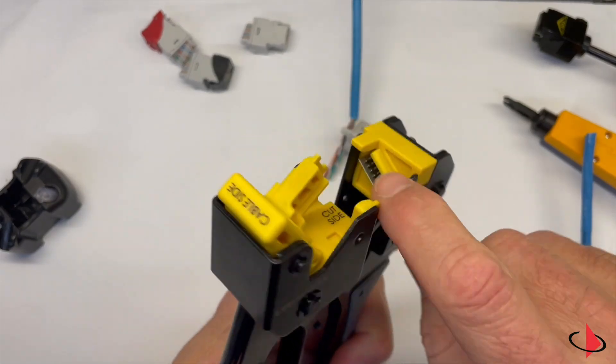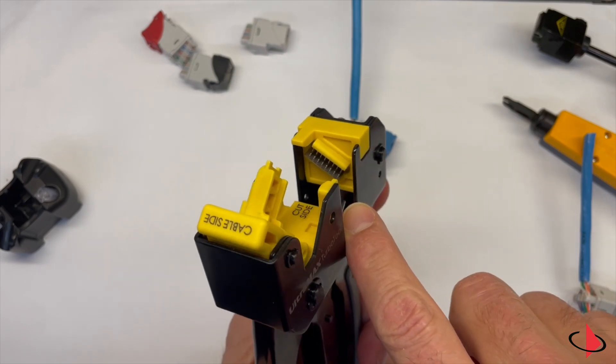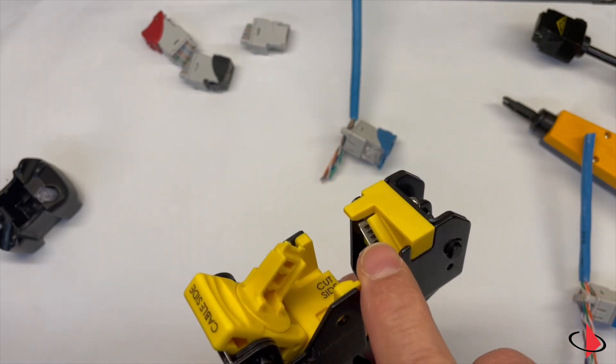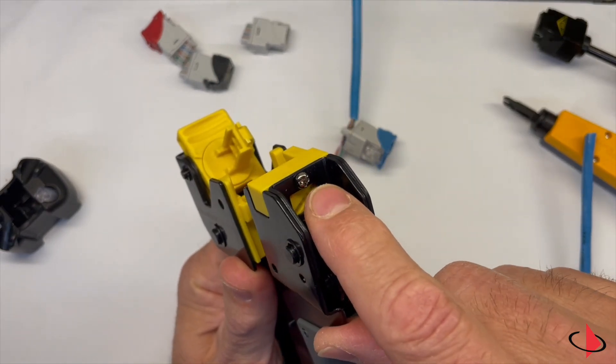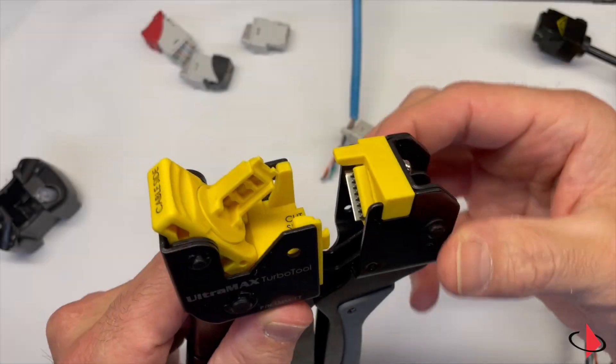Now this cutting die is replaceable, and if the blade seems to be getting dull, it's just a matter of removing the blade cartridge with a Phillips screwdriver. This Phillips screw is found here. The cartridge is simply lifted out and replaced, and you're ready to go for more terminations.